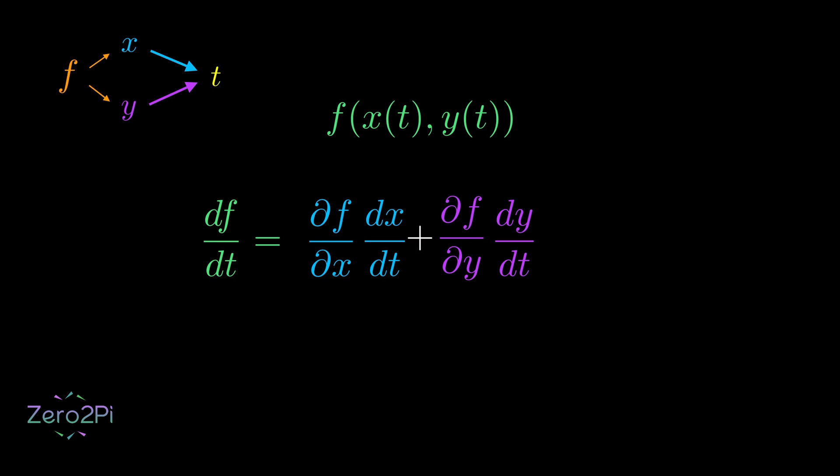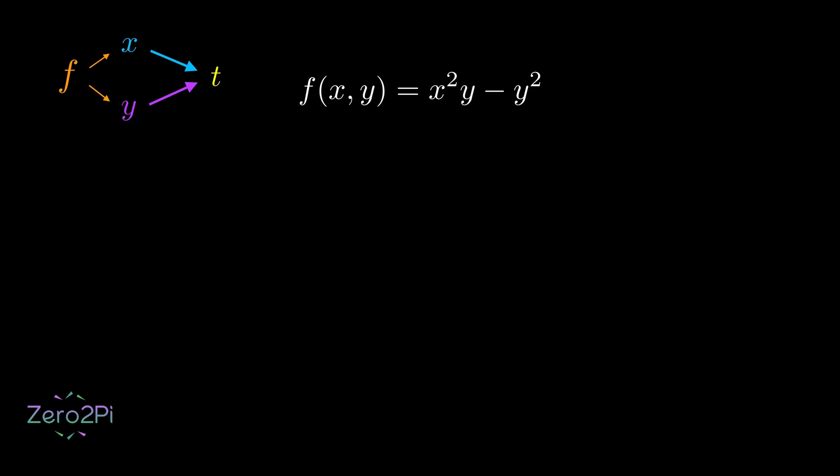It's a way of adding up all the different ways a change in our root variable t can ripple through the system to affect the final output f. Let's take this example. Suppose we have this new function f and x and y are defined by these functions of t. We can either just substitute everything in and then take its derivative with respect to t or we can take derivatives separately.